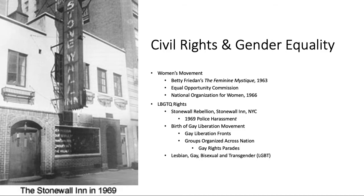Civil rights also included gender equality. One turning point in the women's movement was Betty Friedan's 1963 publication The Feminine Mystique, which talked about ways in which women were limited in career and life aspirations and the discrimination they faced. On the federal level, the Equal Employment Opportunity Commission investigated women's complaints of discrimination and unfair pay and employment conditions. Political groups like the National Organization for Women became big supporters of the Equal Rights Amendment.